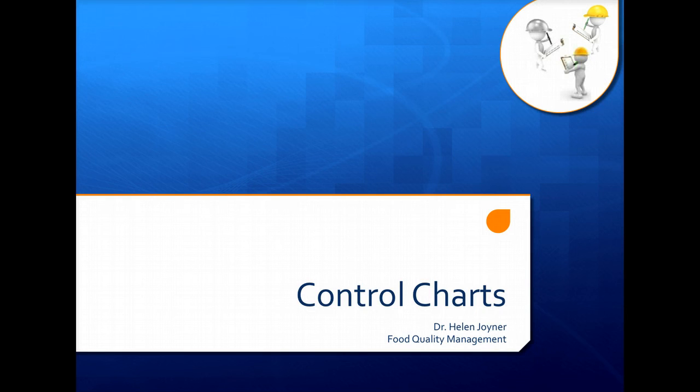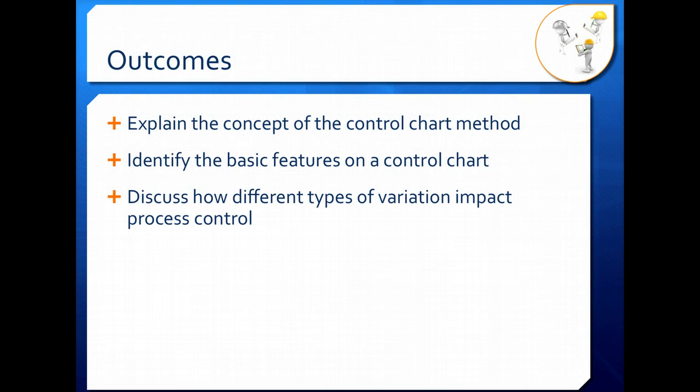We've talked about control charts before when we talked about our basic quality tools in Six Sigma, but we didn't take a careful look at what control charts are, how they're put together, and how to interpret them. So in this lecture, we'll talk about the concept of the control chart method, how these things actually work, we'll look at the basic features on a control chart, and then we'll talk about how different types of variation impact process control.